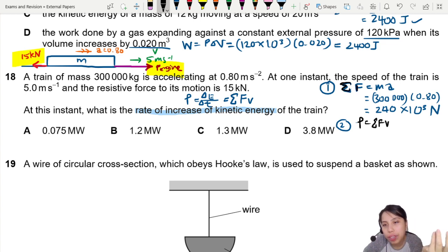The effects of both the engine and frictional force. P equals FV. So here P is the rate of increase of kinetic energy already. So force here is 240 times 10³ times, what's the velocity at that instant? 5 m/s times 5.